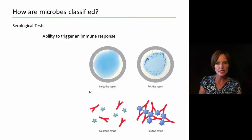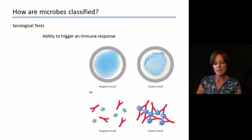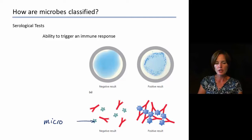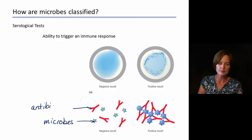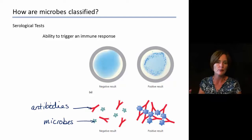If we look closer at the ability of microbes to trigger an immune response, if you look at the pictures at the bottom, we can see the microbes, which are the little blue spots. And then we also have the antibodies, which are the little red Ys right here. And if the antibodies are able to actually stick to the microbe, then we do get a positive result or we get that immune response.